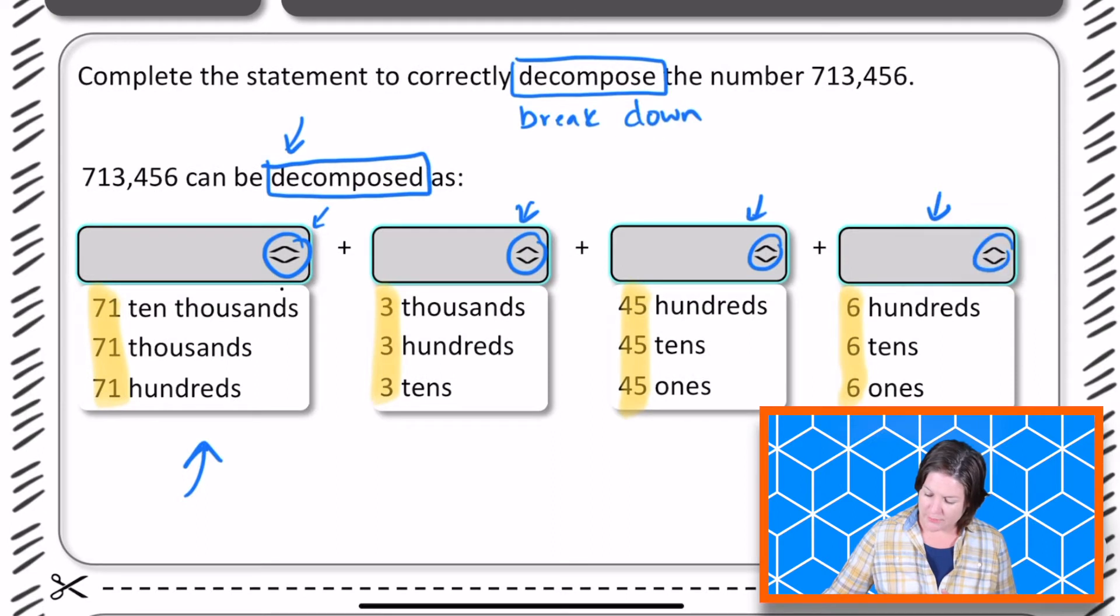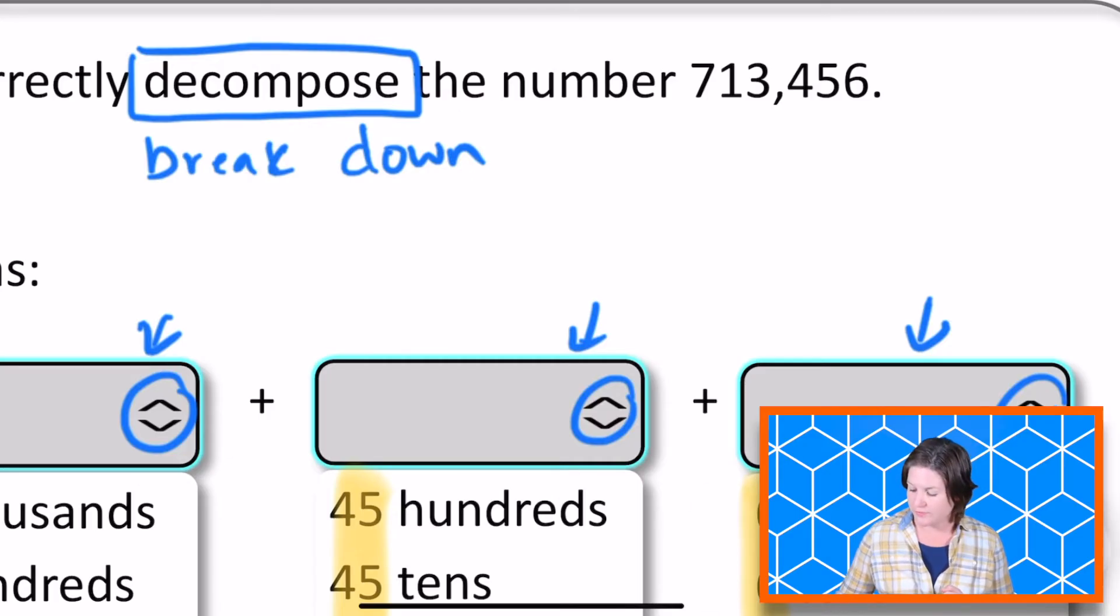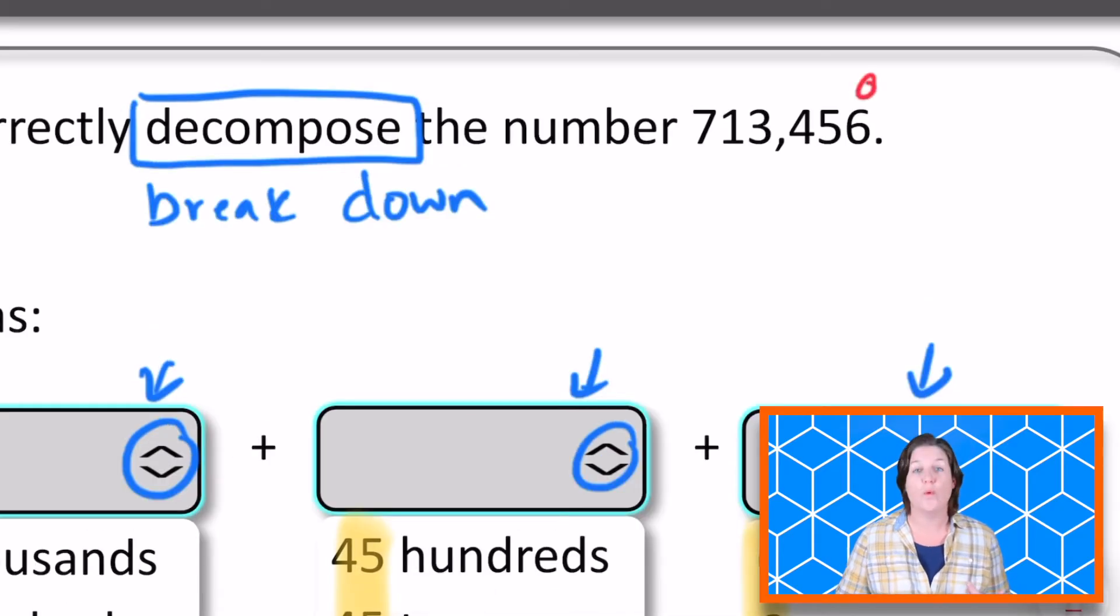So here's what I'm going to do. I'm going to go right over here to this part of our number 713,456 and what I'm going to do is just label my places first. I'm seeing that place value is involved here. So the digit 6 is in the ones place. The next digit 5 is in what place? The tens. The 4 is in the hundreds place and that is the ones period.